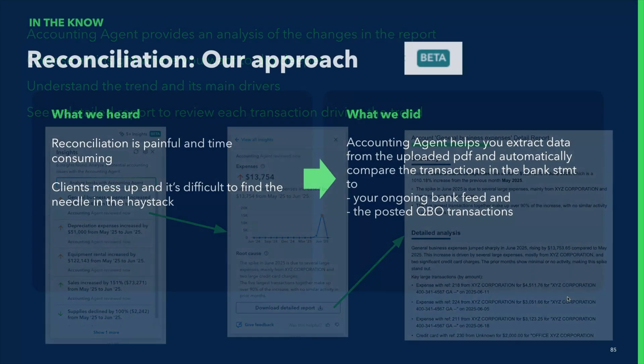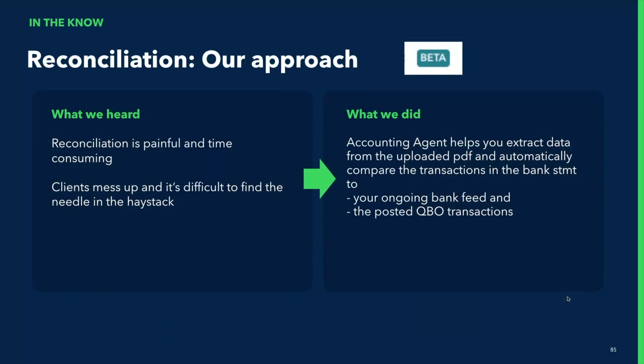Finally, reconciliation. This feature ensures that your books are complete — not just accurate, but really done. You upload a PDF bank statement, and we compare it to your bank feed and posted transactions. We'll highlight what's missing or mismatched, and this will help you reconcile quickly and move on. Let's take a look at a video of how that works.